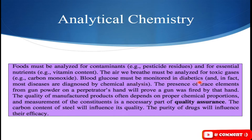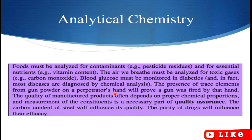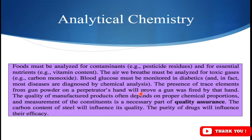Blood glucose must be monitored in diabetic patients, and in fact most diseases are diagnosed by chemical analysis, so analytical chemistry plays a vital role in the determination of different diseases. The presence of trace elements from gunpowder on a perpetrator's hand will prove a gun was fired by that hand. This is the forensic analysis aspect — a sample taken from the hand of the guilty can be analyzed, and even a small amount of gunpowder can be detected by analytical methods.